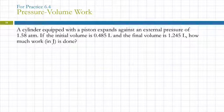So a cylinder equipped with a piston expands against an external pressure of 1.58 atmospheres. If the initial volume is 0.485 liters, the final volume is 1.245 liters. How much work in joules is done?